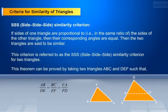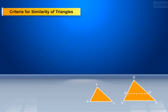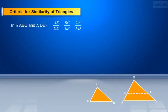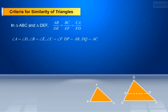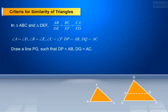This theorem can be proved by taking two triangles ABC and DEF such that AB/DE equals BC/EF equals CA/FD. To prove: angle A equals angle D, angle B equals angle E, angle C equals angle F. Draw a line PQ such that DP equals AB and DQ equals AC.